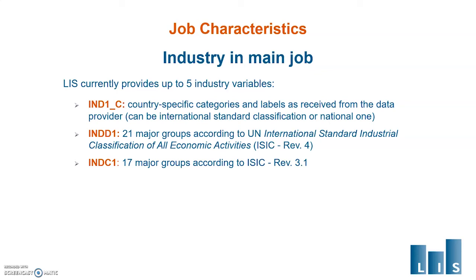In rare cases, if we receive a detailed national classification at at least four digits level — like in Mexico — we will harmonize into both variables. Then we have IndustryB1, for which we collapse the 21 ISIC4 major groups from IndustryD1, or the 17 ISIC3 major groups from IndustryC1, into nine categories.